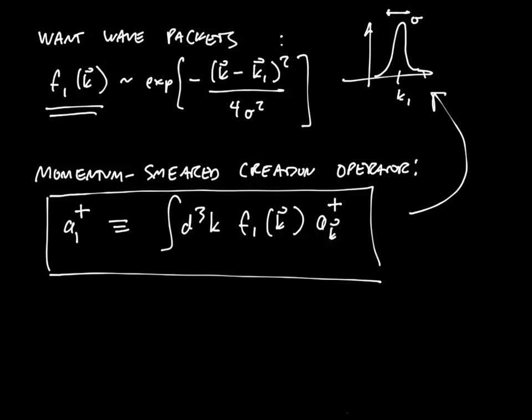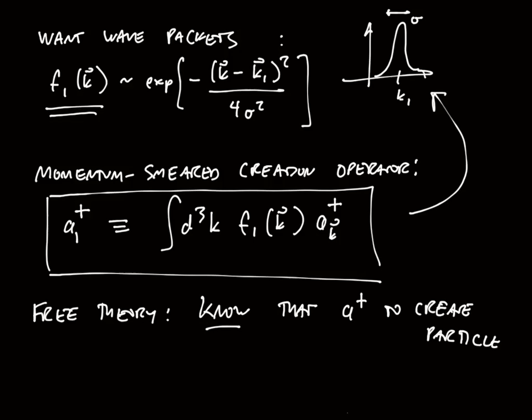Now we need to come to a philosophical point. What I want to do is understand how initial states evolve with time in the free theory. We know that we use the creation operators to create particles - that's the definition of the creation operator. What about in the interacting theory? Is this still true?